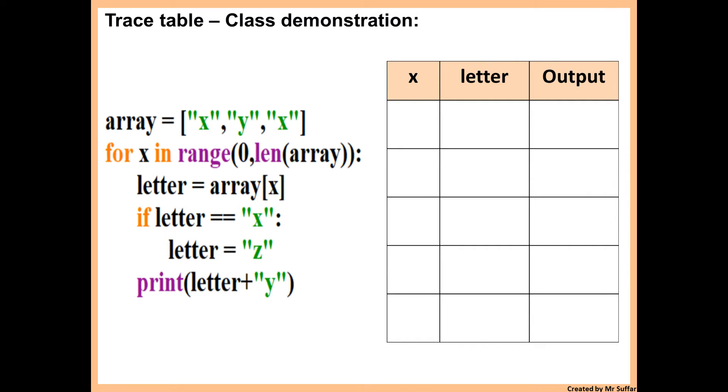Here we have another example. We've got x, y and x in an array. So it says for x in range from zero to the length of array. The length of the array is three. So first x is zero.